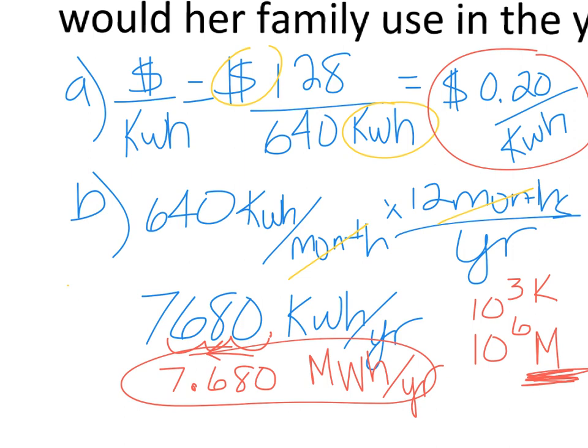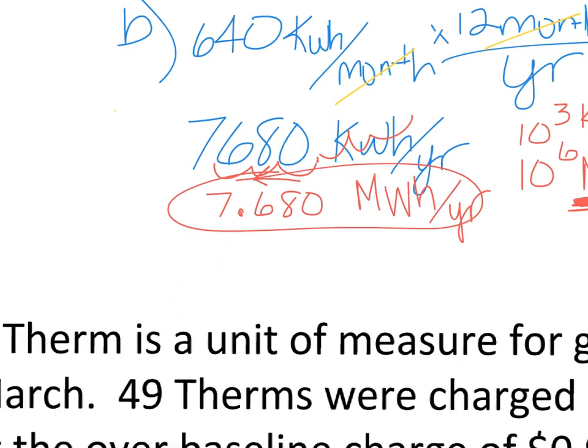If I had moved my decimal the other way—1, 2, 3—I would have ended up with a bigger number, and so I knew that would be wrong. So we have a bigger unit means a smaller number, and vice versa too. A smaller unit means a bigger number. So that's one thing that you can use to help you remember which way to move the decimal.